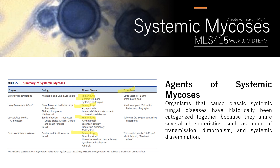Take note that although the term 'systemic' generally refers to the organisms described in this video lecture, it must be understood that any fungi, given an immunocompromised host, has the potential to become invasive and cause infection. This means that even cutaneous, subcutaneous, and other fungal agents from previous lectures can disseminate and cause multi-organ infections if the host's immune system is compromised.